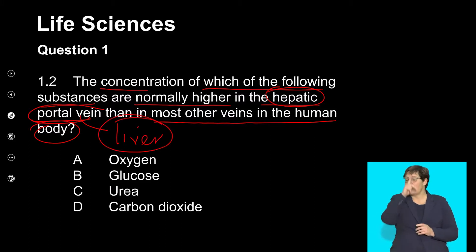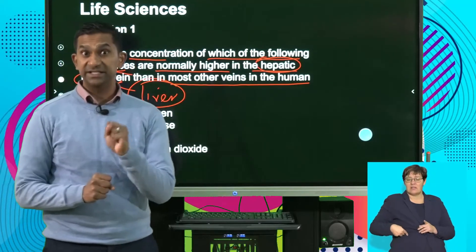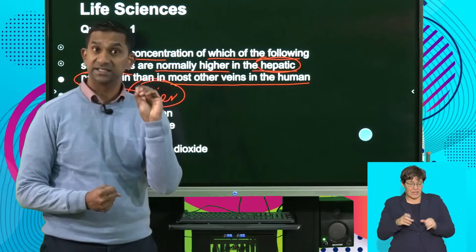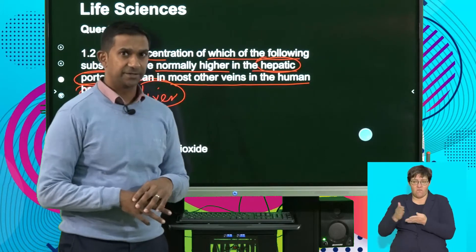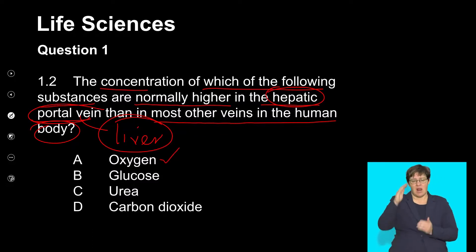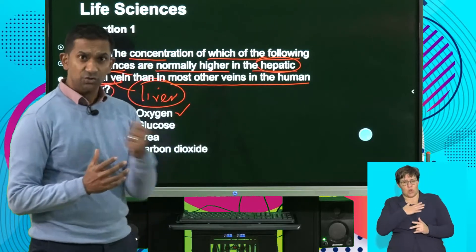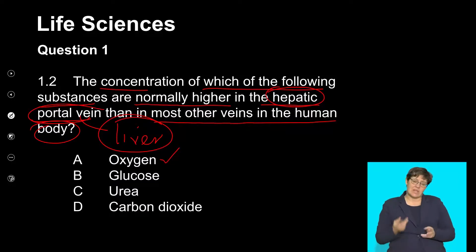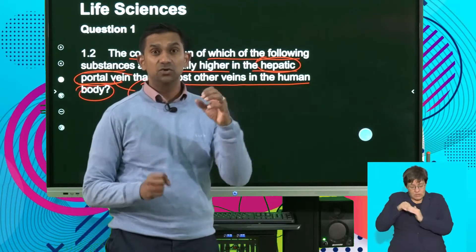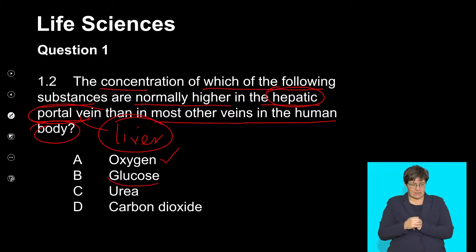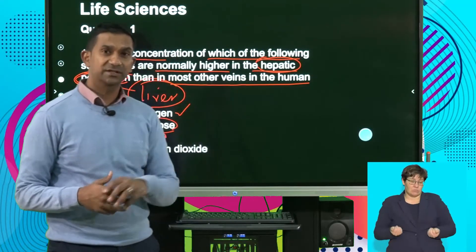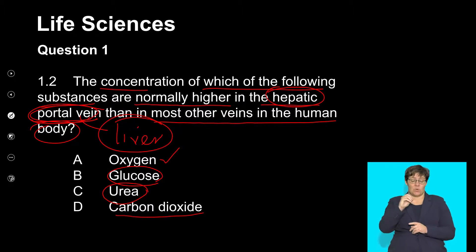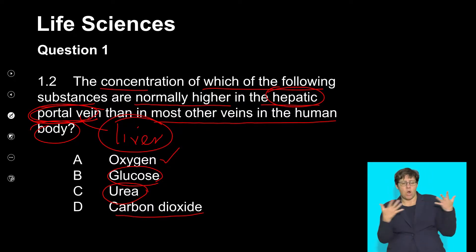Remember that the function of the liver is to break down excess amino acids — we refer to that as the deamination of excess amino acids. It also plays an important role in the removal of toxins from the body. Oxygen would be less concentrated because the liver cells use some oxygen. The liver plays an important role in taking glucose and storing it as glycogen, so a large amount of glucose can be stored. This vein would also have a large amount of urea, which is a waste product produced there. Carbon dioxide is another option to consider.